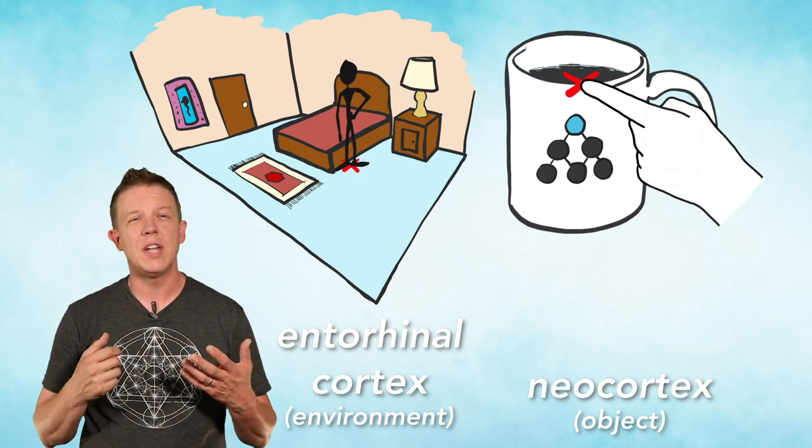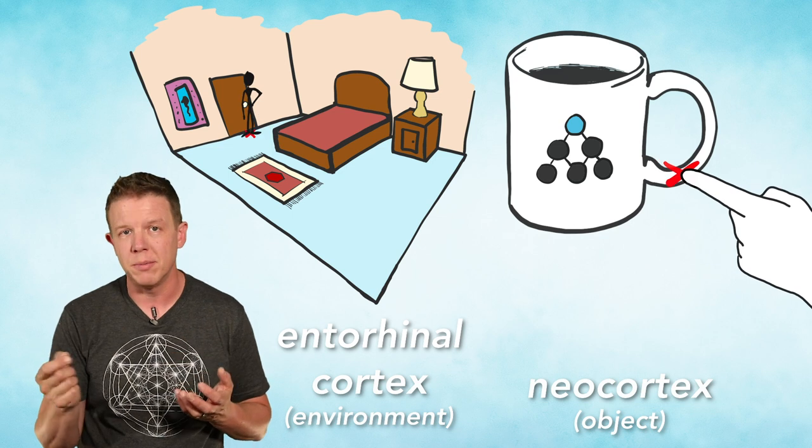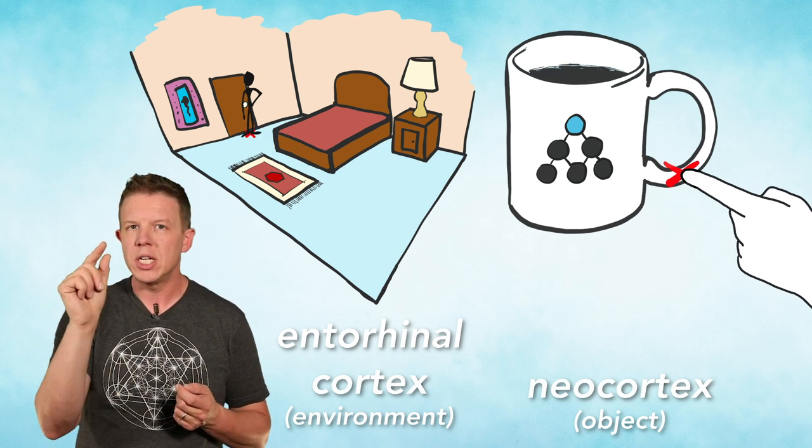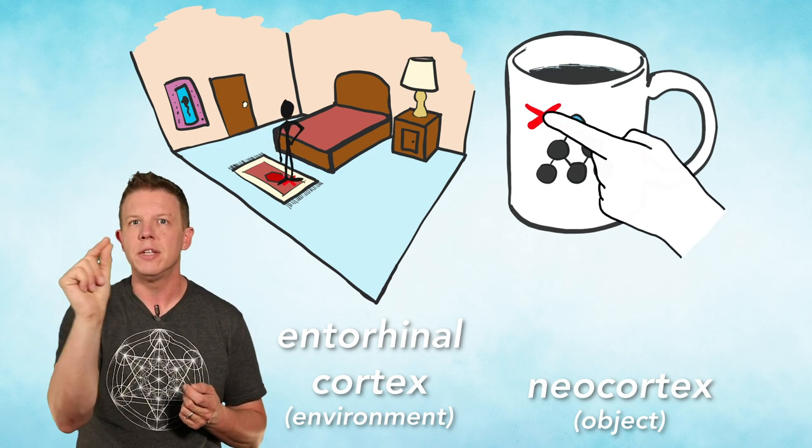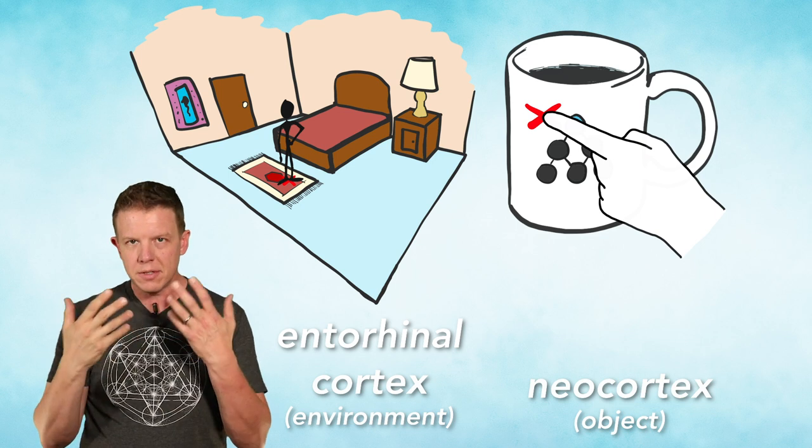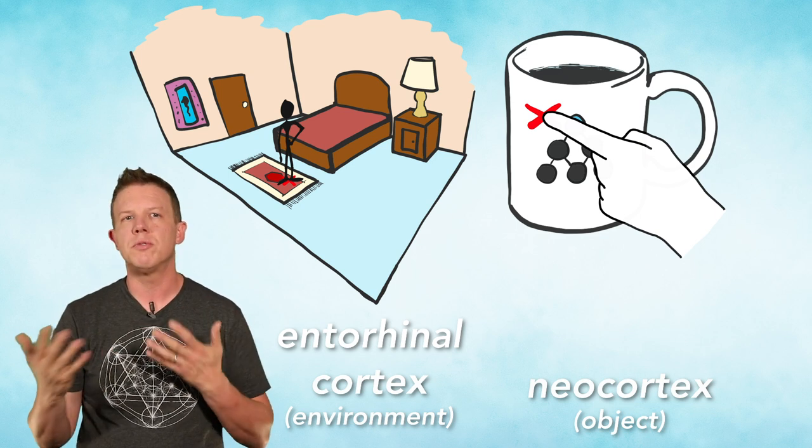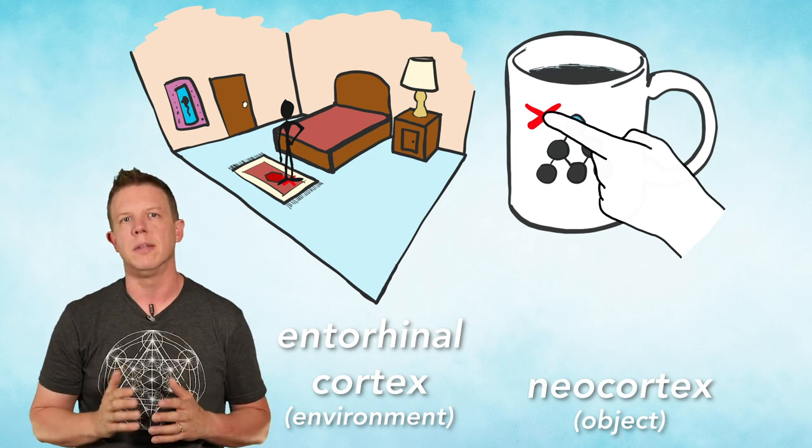In the neocortex, the location is not the location of the organism in an environment, but the location of a sensory patch in space. To really dissect this, we need to talk about sensory patches and how they connect to cortical columns.